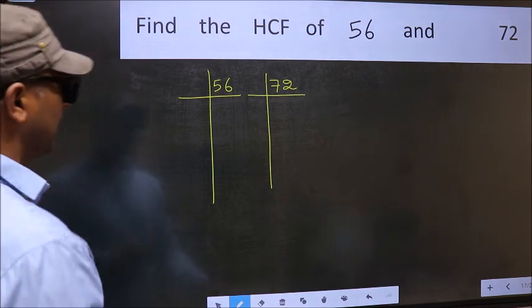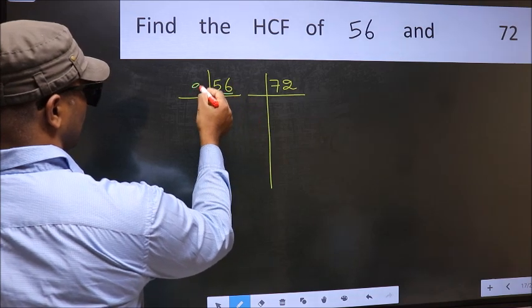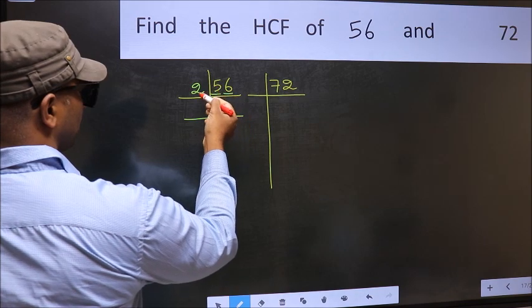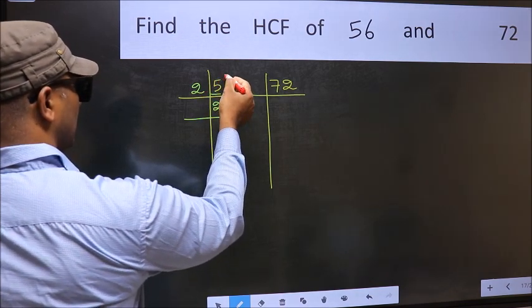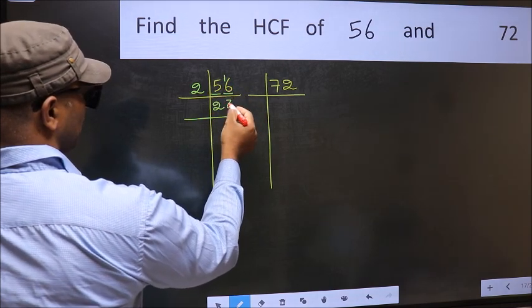Next, in this number, last digit 6 is even, so take 2. First number 5. A number close to 5 in the 2 table is 2×2=4. 5-4=1, carry forward 1 to get 16. When do we get 16 in the 2 table? 2×8=16.